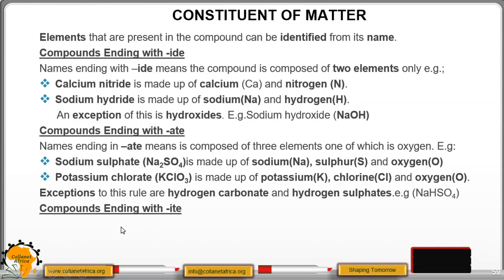Compound ending with -ite means, for example, they have three elements, one of which is oxygen. However, amount of oxygen is less than the compound with -ate. So the oxygen here is less than in this. So for example, we have sodium sulfite. So if you compare with sodium sulfate, you'll find that sodium here, sodium there, sulfur, sulfur, but the number of oxygen here is four, and this one are three. So this one has less than the one with -ate. It is made up of sodium, sulfur, and oxygen, like the one, but this one, the oxygen is less than in the compound with -ate.